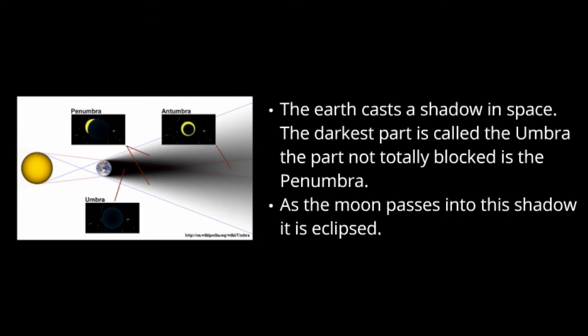If the Sun is shining on the Earth, behind the Earth is a shadow. So the Earth is going to cast a shadow. There's part of that shadow which gets no light whatsoever, and that's called the umbra. There's some parts of the shadow where you get a little bit of light from the Sun, but not all of it. That's called the penumbra. And when the Moon passes into this shadow, it causes the light on the Moon to disappear, and the Moon is eclipsed.